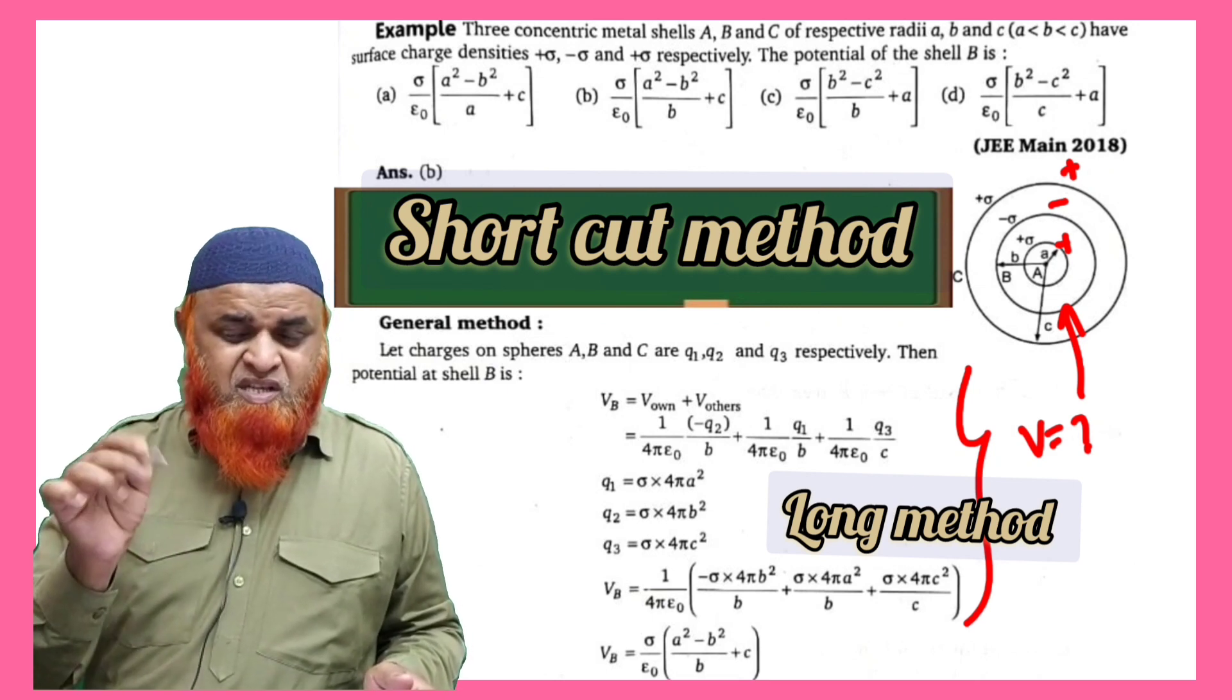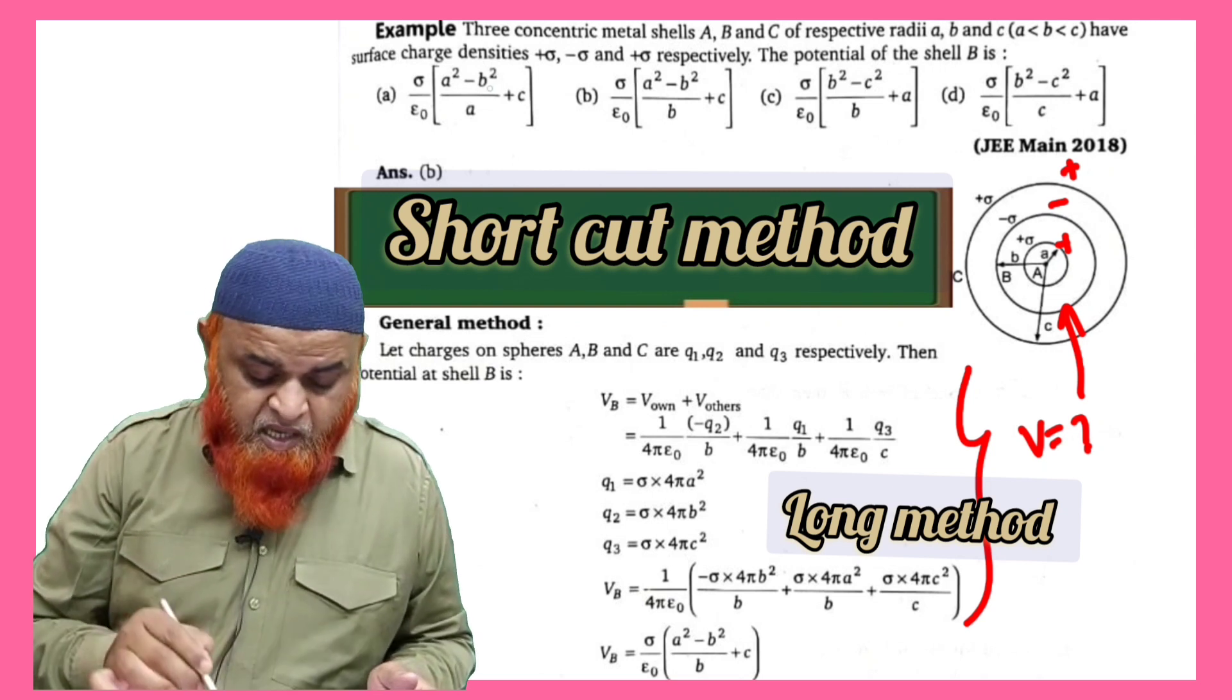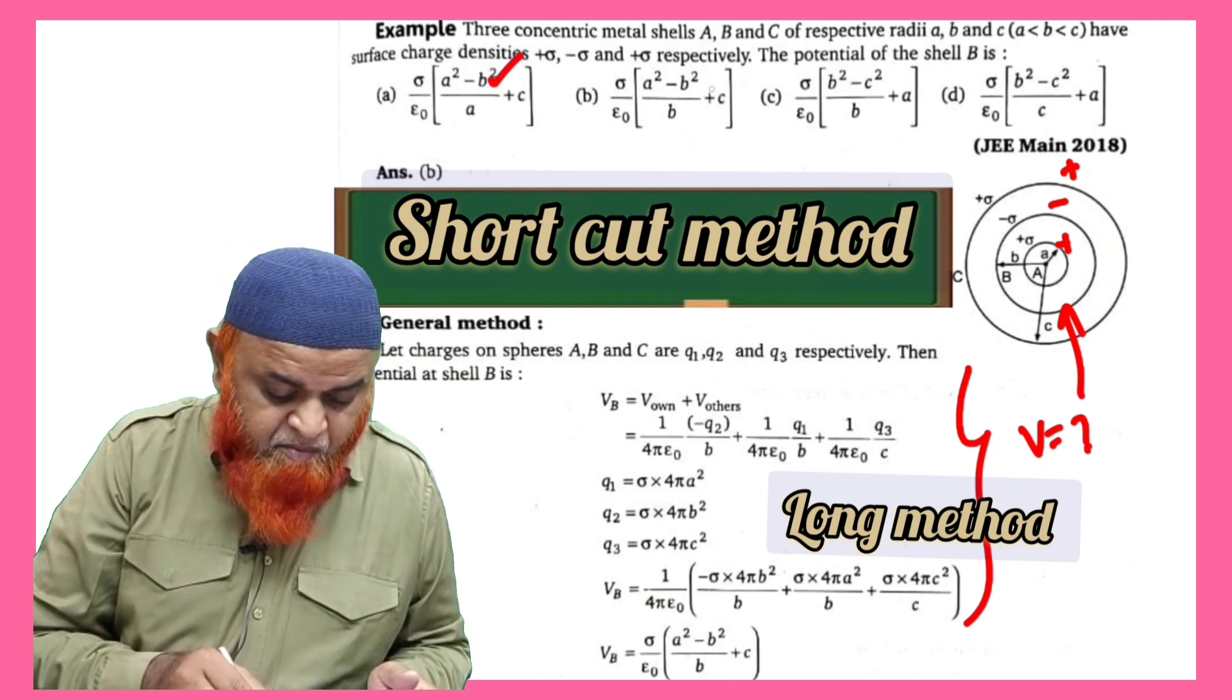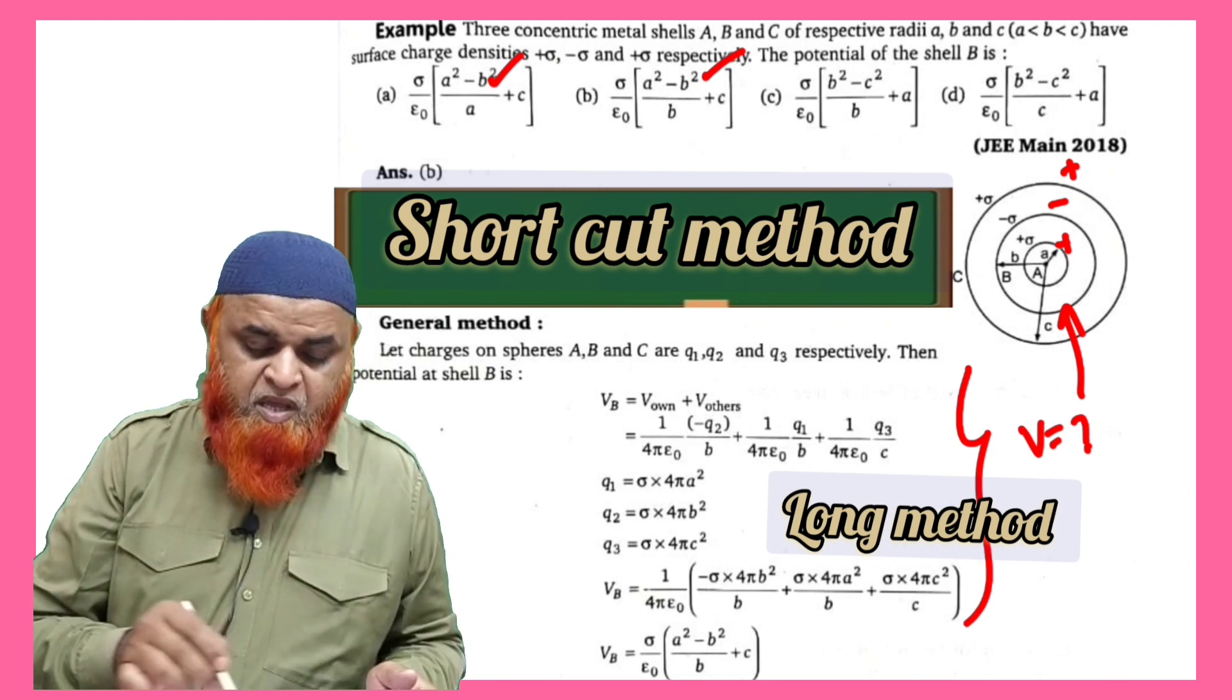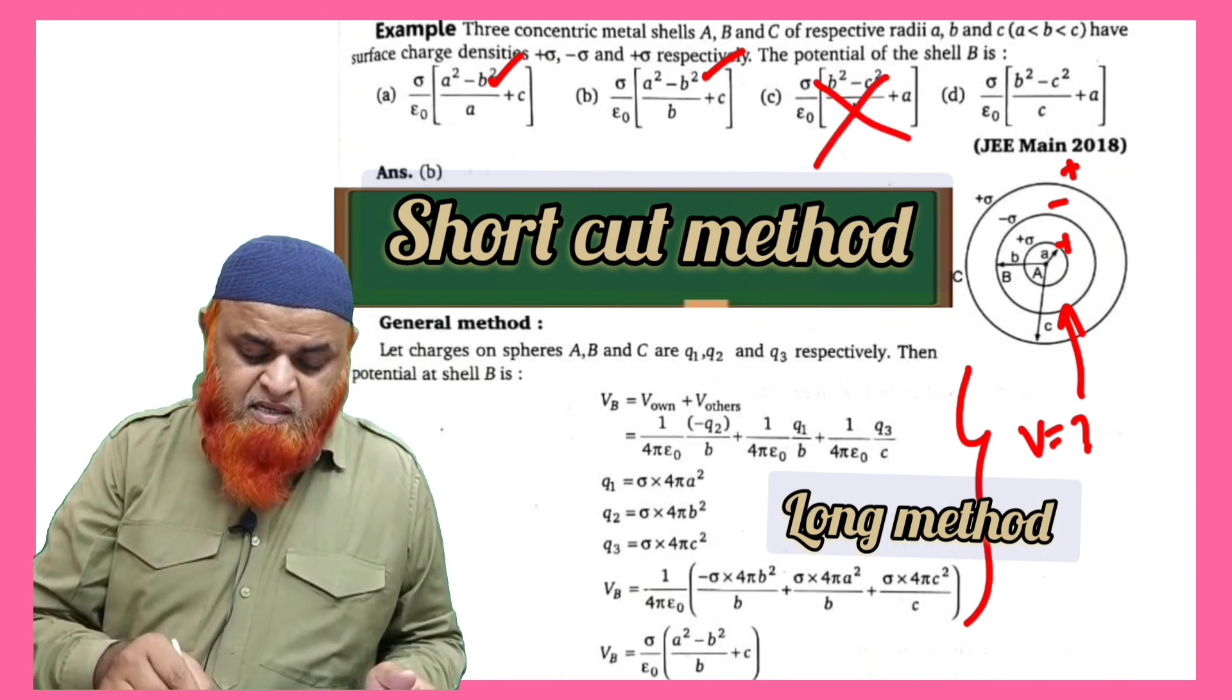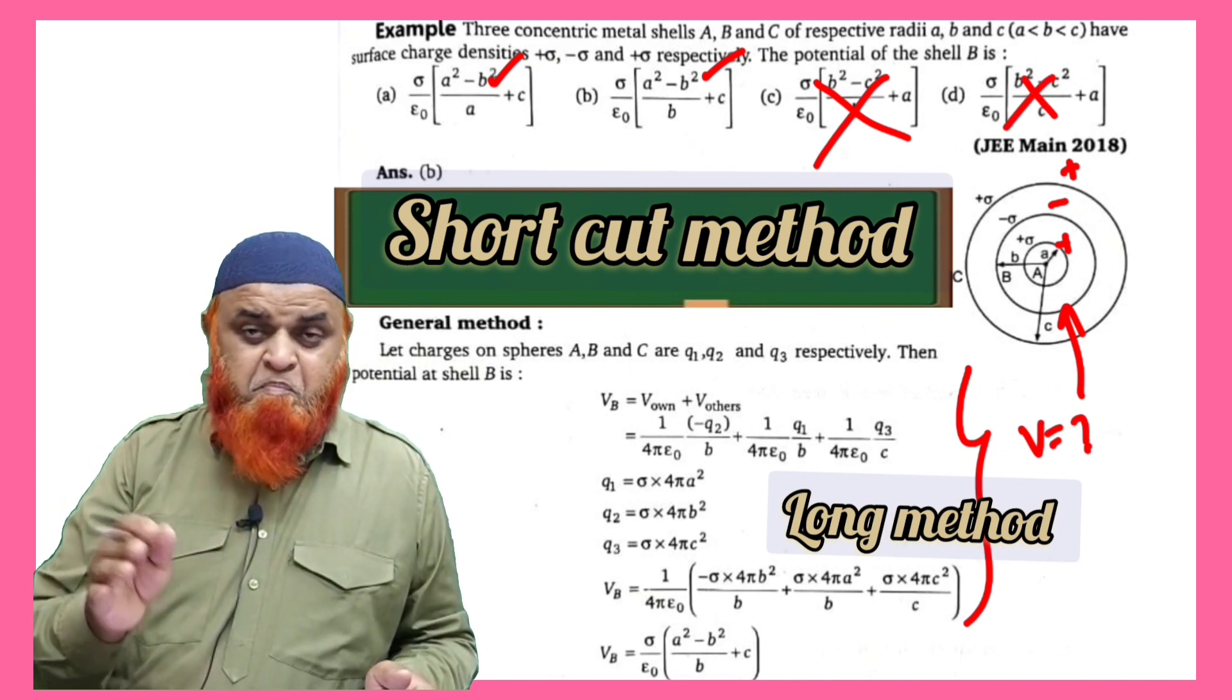That means you have to select the options in which a minus sign comes before B. So here, A is having minus sign and B option is also having minus sign. So directly you can remove these two options which are not having a minus sign before B.